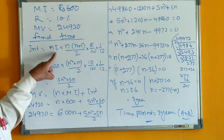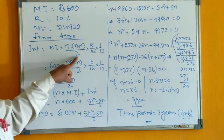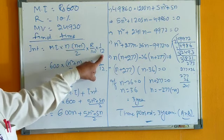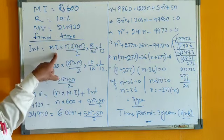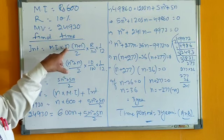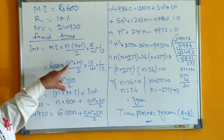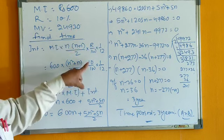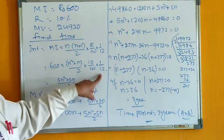So, the interest is equal to MI into N(N+1) by 2 into R by 100 into 1 by 12. Now, substitute MI value 600, N(N+1) is N square plus N by 2, rate is given 10%, so R by 100 into 1 by 12.